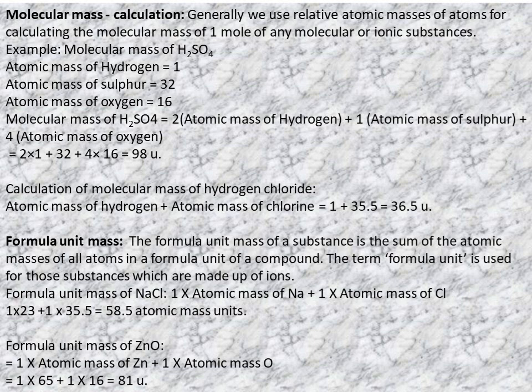Molecular mass of hydrogen chloride (HCl): atomic mass of H + atomic mass of Cl = 1 × 1 + 35.5 = 36.5u.